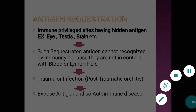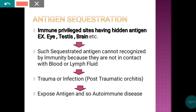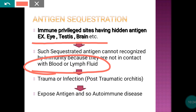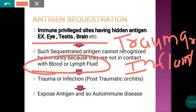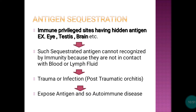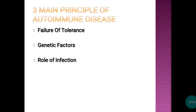The fourth mechanism is antigen sequestration. Certain immune-privileged organs such as the eye, testes, and brain contain hidden antigens that are sequestrated and not in contact with blood or lymphatics, so they cannot be recognized by the immune system. However, if there is trauma or inflammation to these organs, sequestrated antigens can be exposed, leading to antibody production and autoimmune disease.